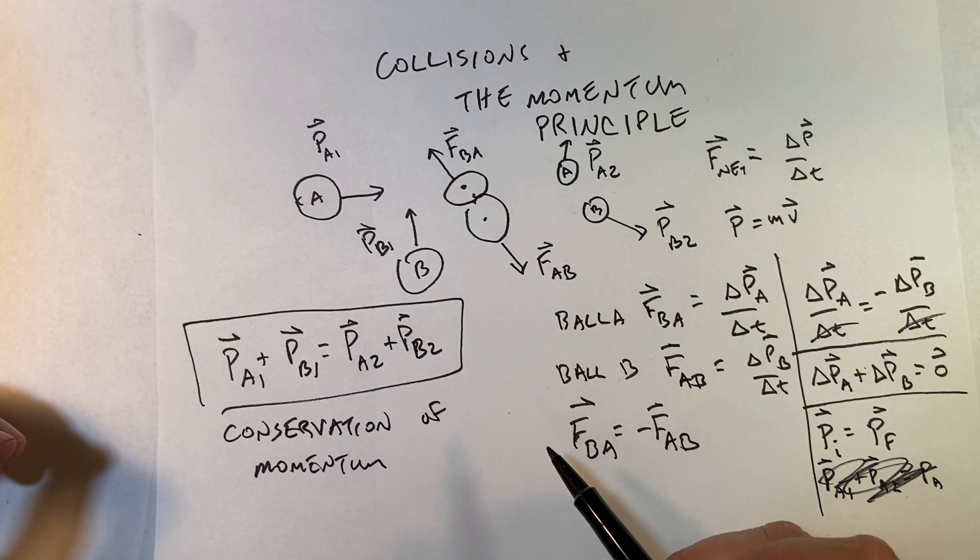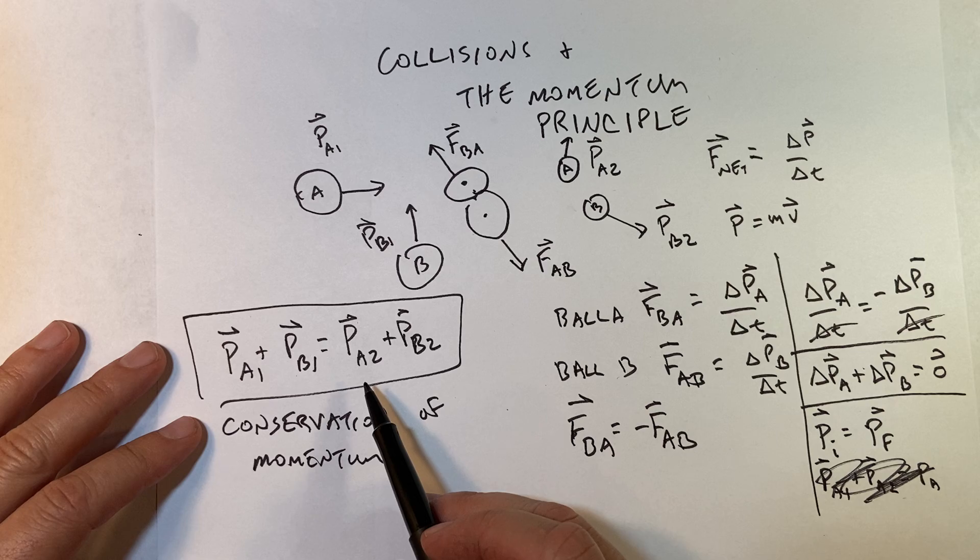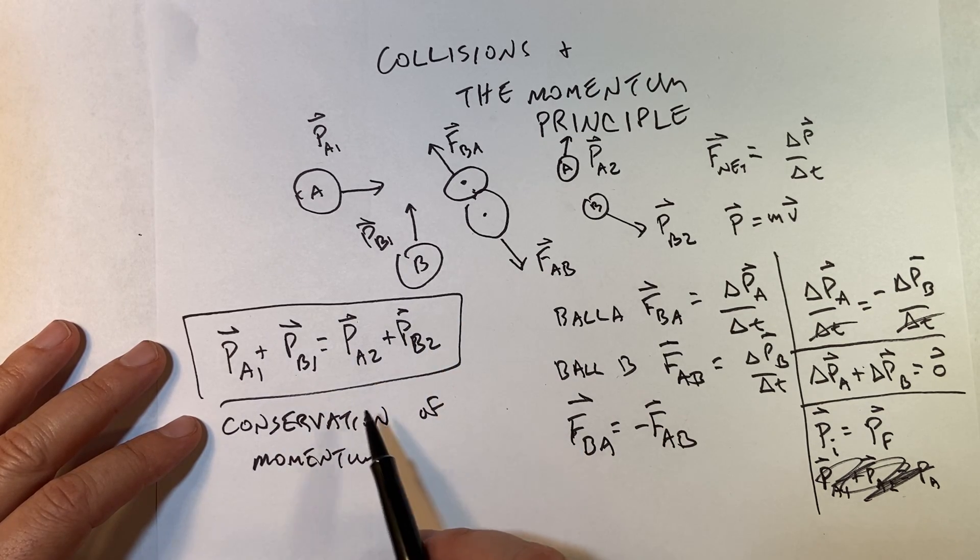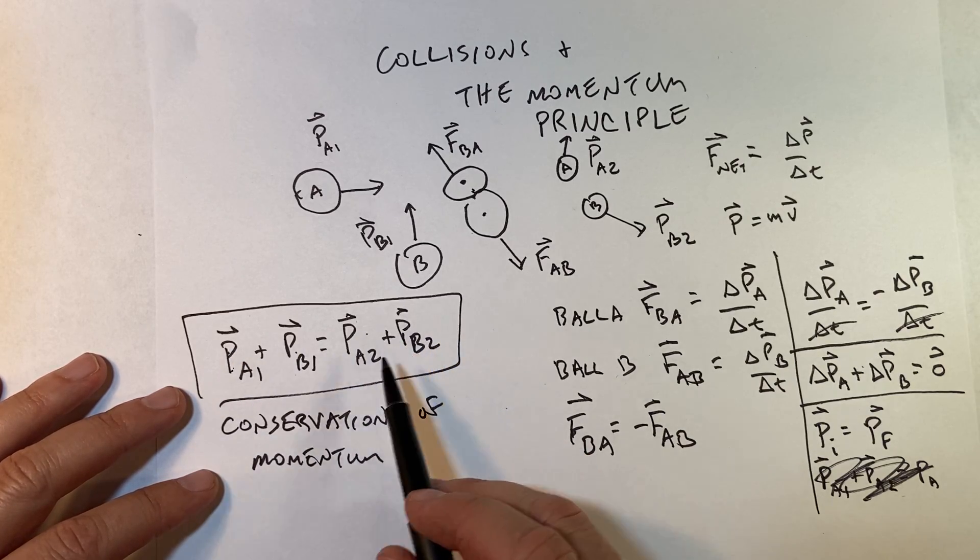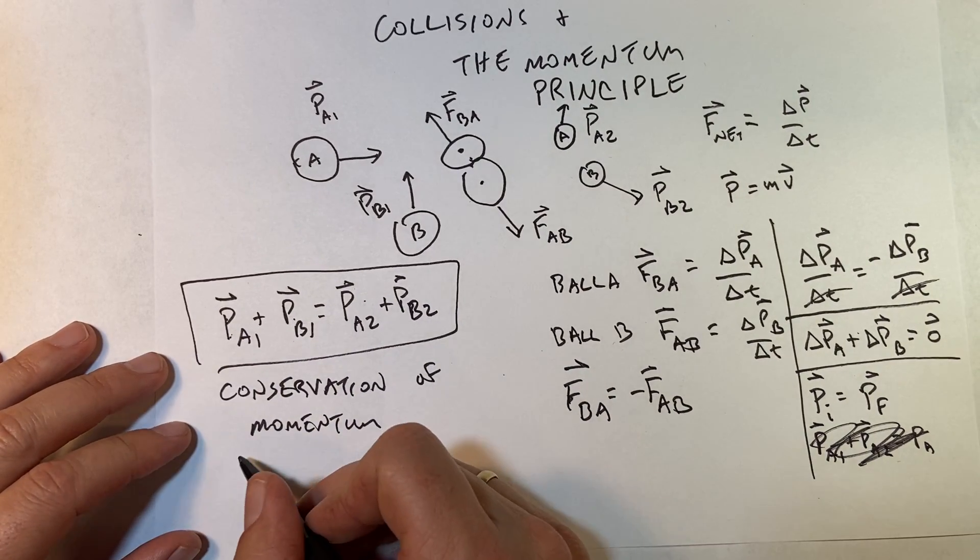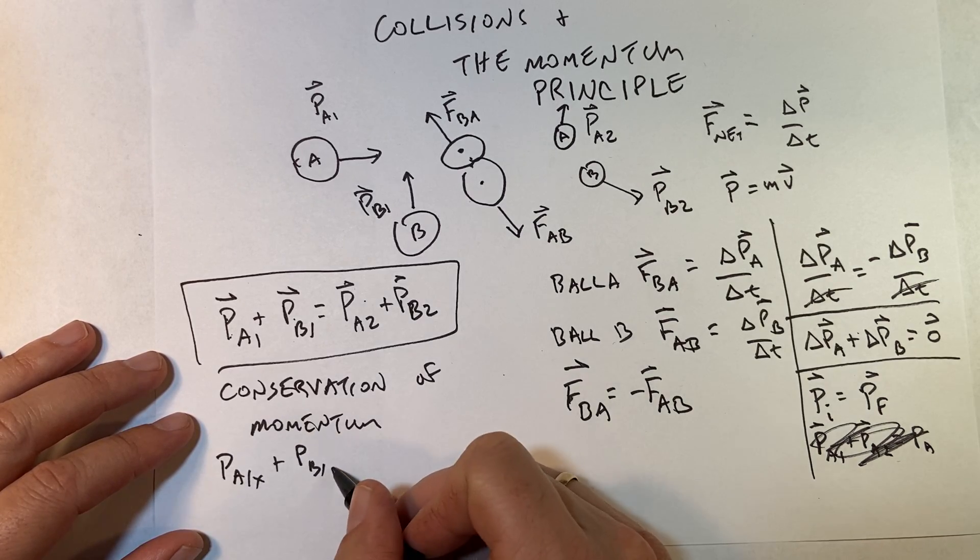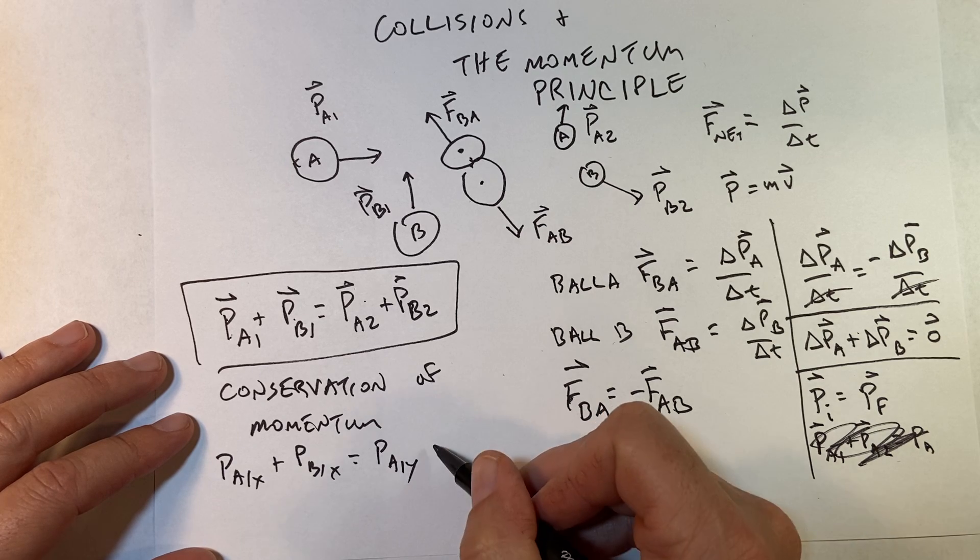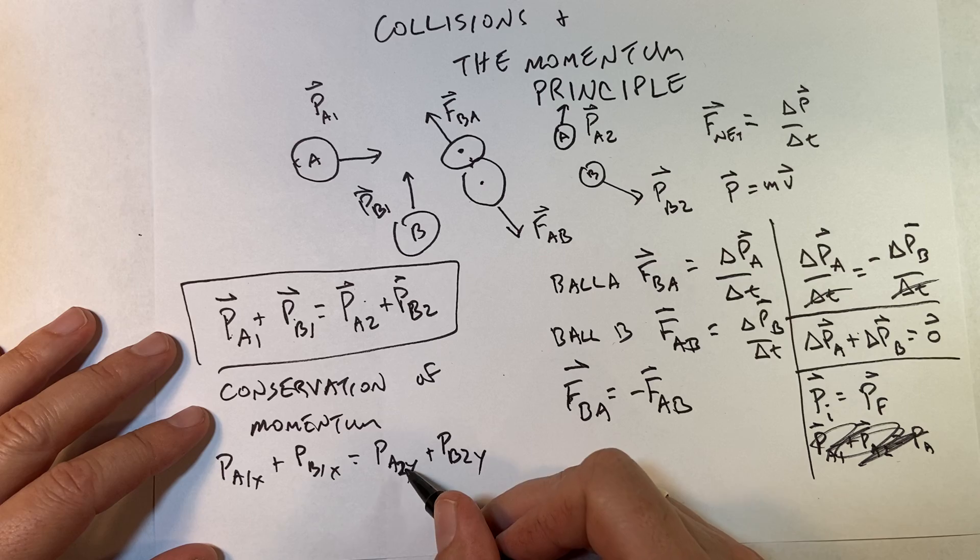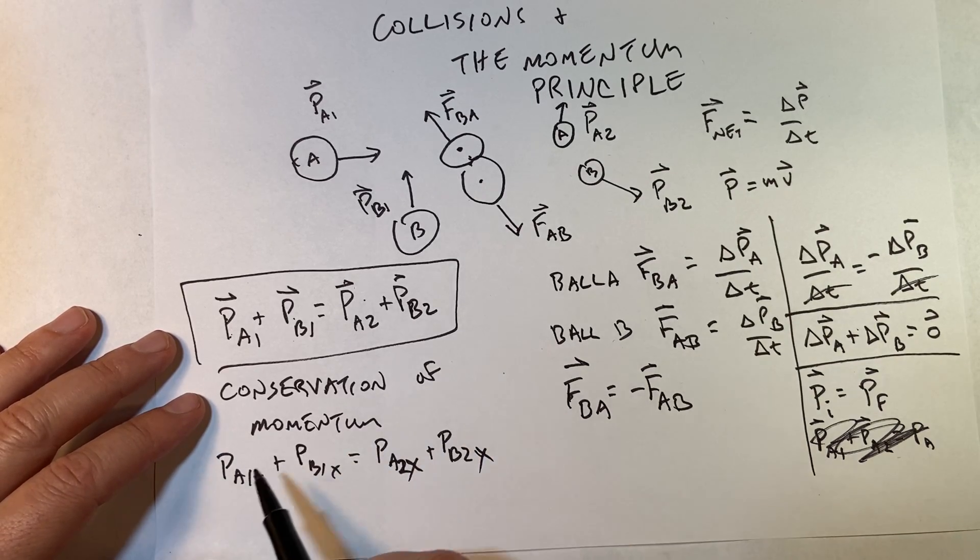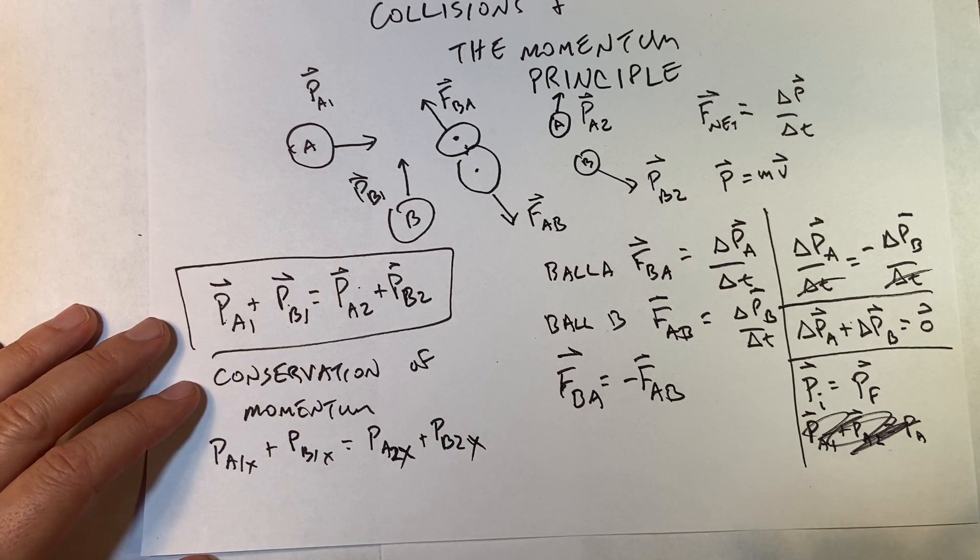When we say a quantity is conserved, that means before something happens, the momentum before is equal to after something happens. Another important thing to realize here is that momentum is a vector, so I can write this vector equation, or I could write this as p_A1x plus p_B1x equals p_A2x plus p_B2x. I'm just thinking ahead, this is the x component of that equation. And I can do the same thing for y.